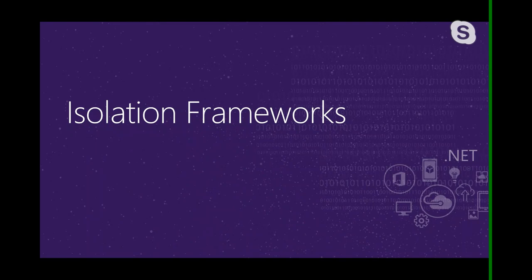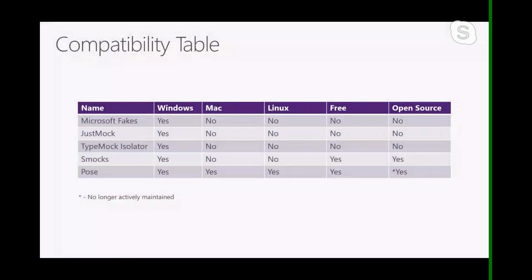Isolation frameworks can be thought of as mocking frameworks plus-plus. Typically, mocking frameworks are limited because they can only mock things that can be extended by the regular C# language — they can mock interfaces and virtual methods. However, for static methods, concrete classes, and sealed classes, mocking frameworks fall short. Isolation frameworks allow you to mock pretty much anything: static classes, non-virtual methods, sealed classes, and even things in assemblies you have no source code access to.